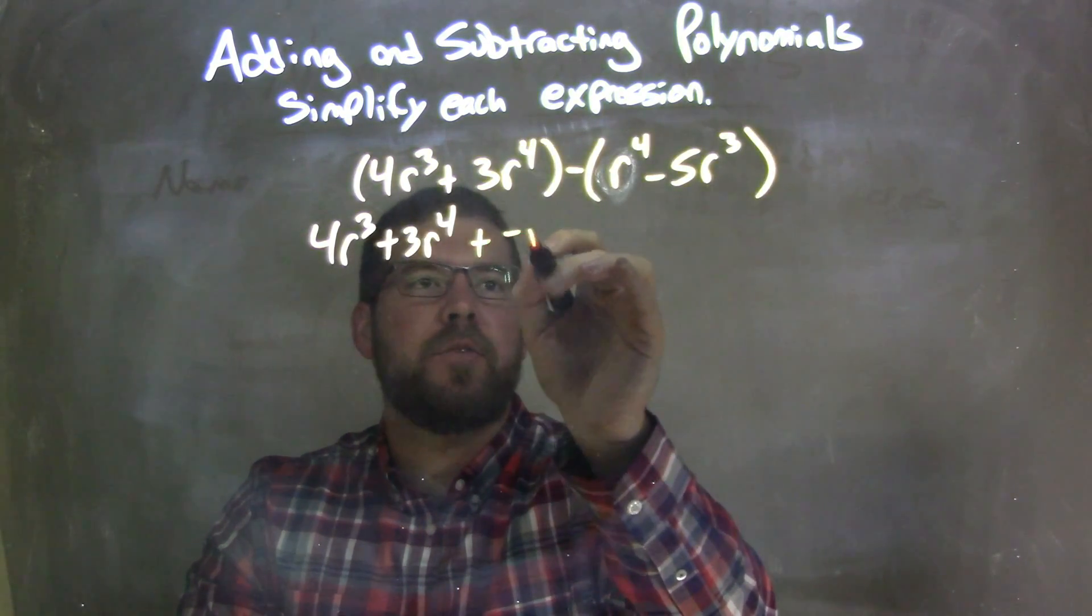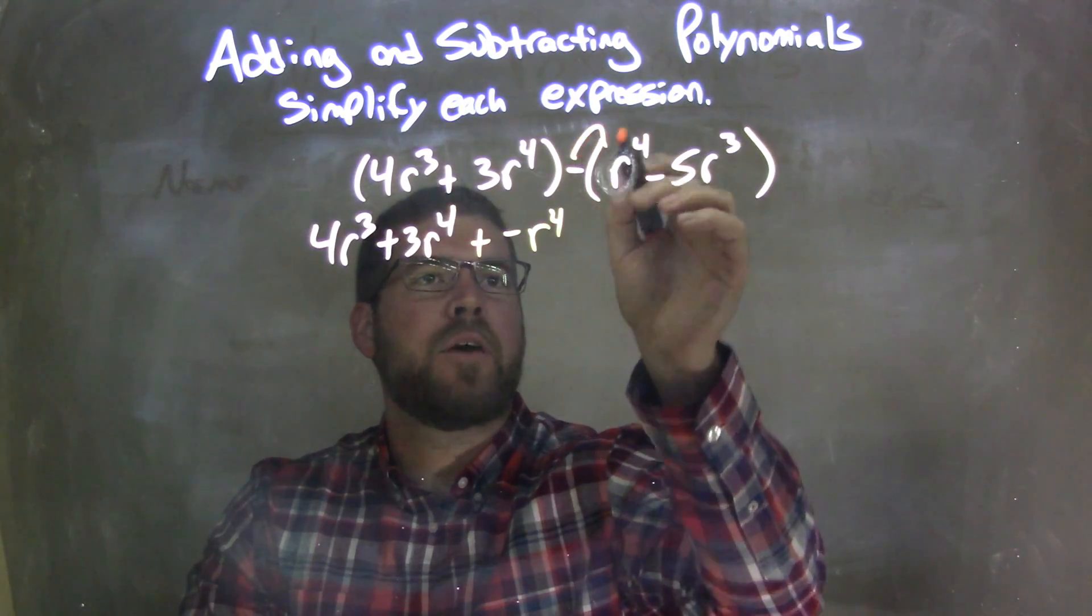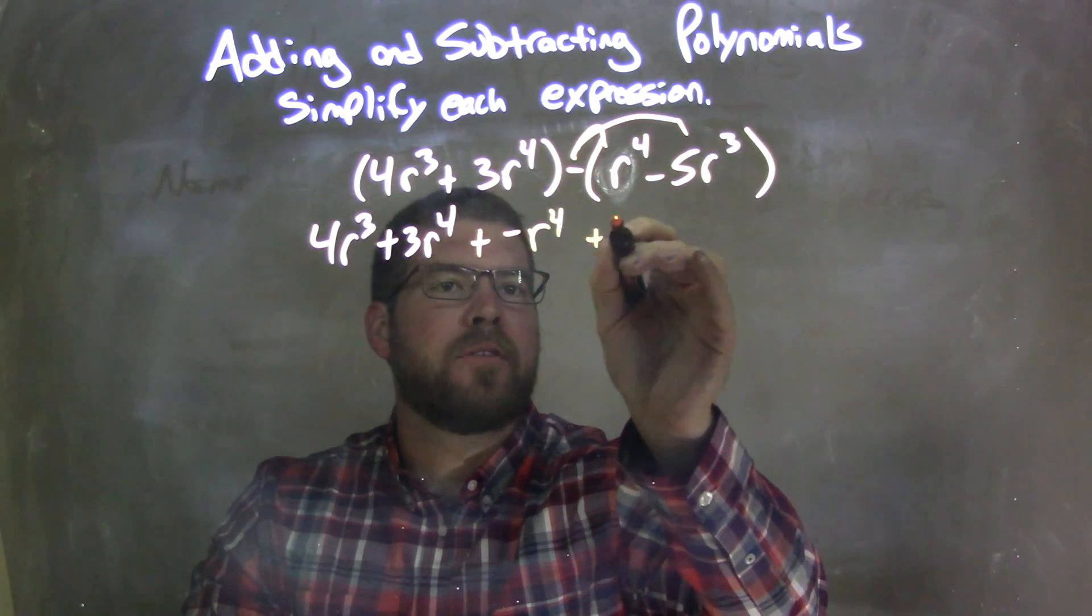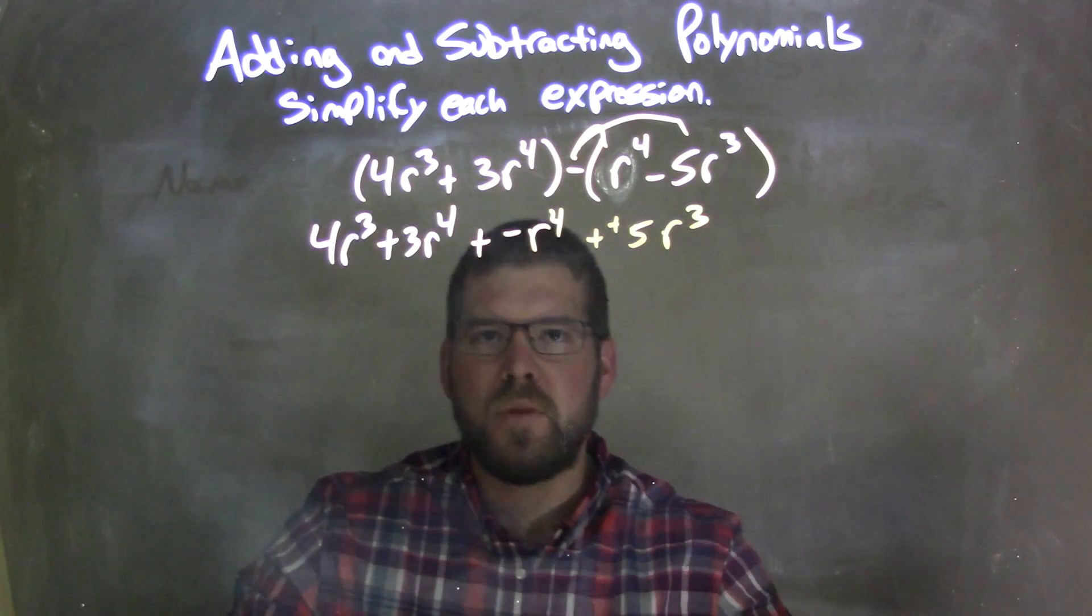So I have plus negative r⁴, distributing that across, and I distribute it to this one. Minus a negative is plus a positive, so we have plus a positive 5r³.